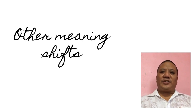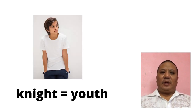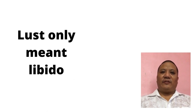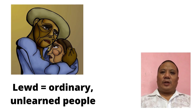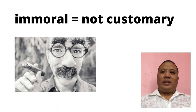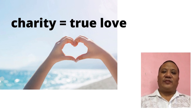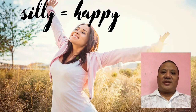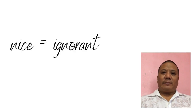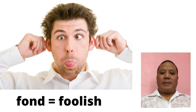There were other meaning shifts as well. For example, the word knight used to mean youth. Lust referred only to libido. Lewd meant ordinary, unlearned people. Immoral meant not customary. Charity, instead of caring for the poor, referred to the highest form of love. Silly meant happy. Nice meant ignorant. And fond meant foolish.